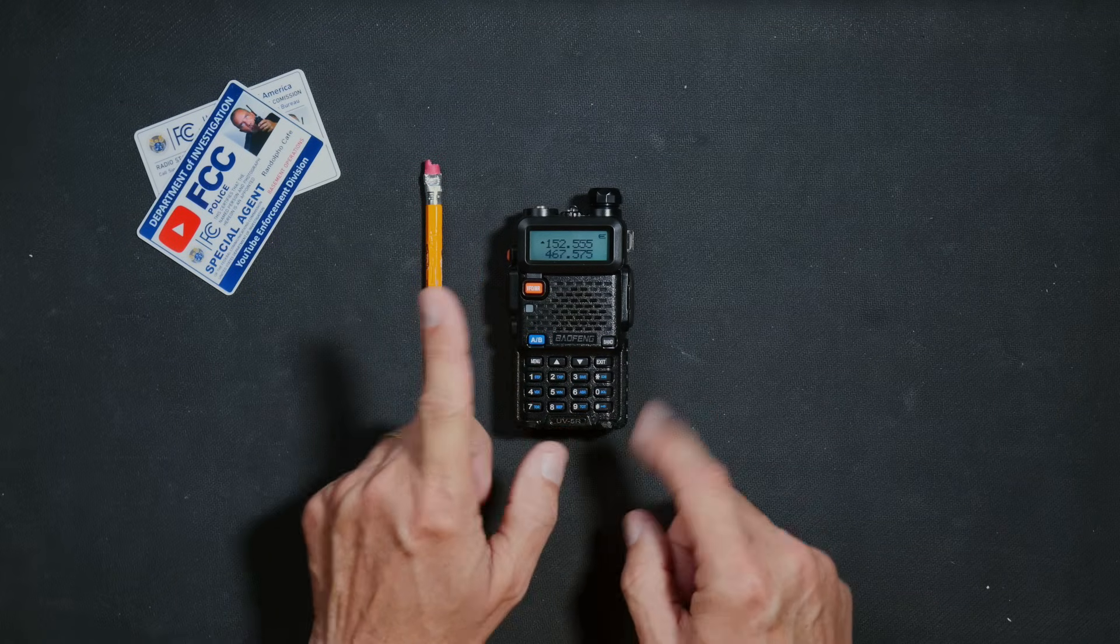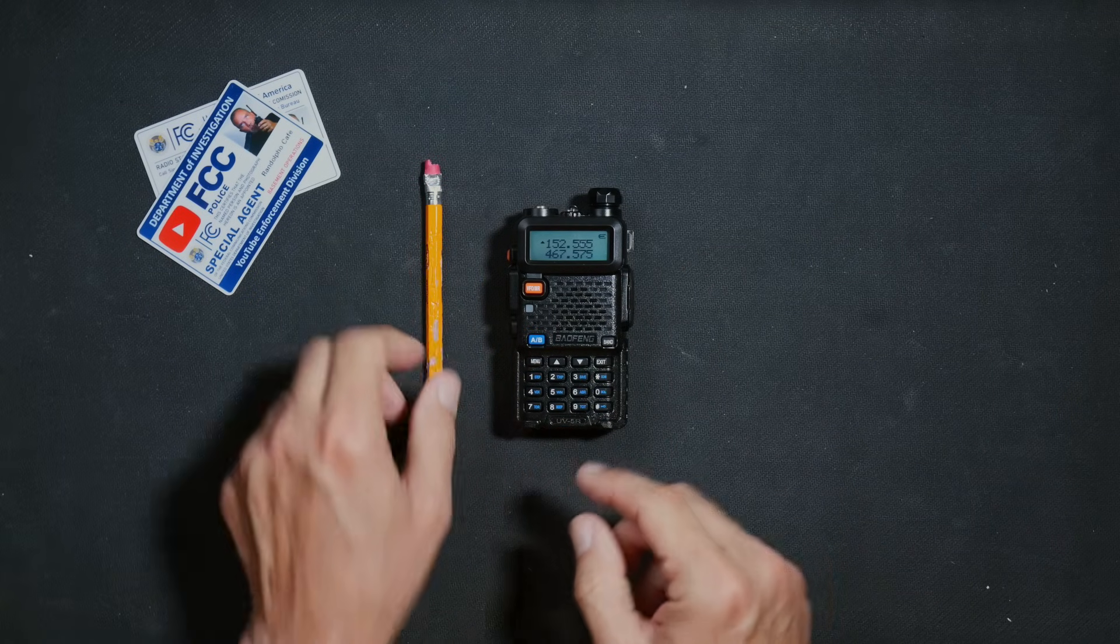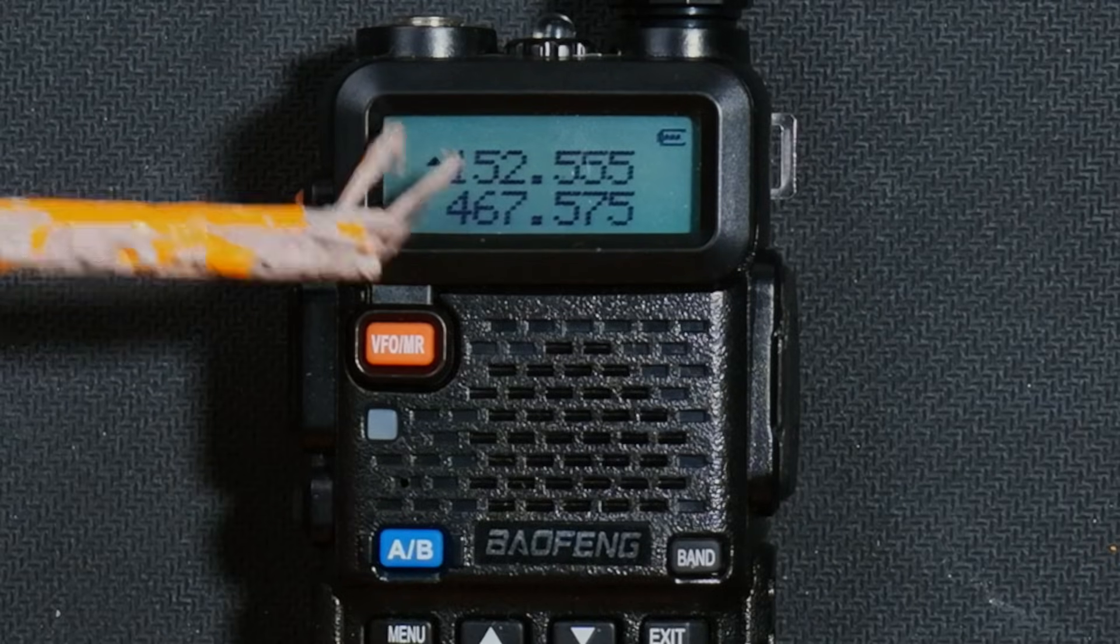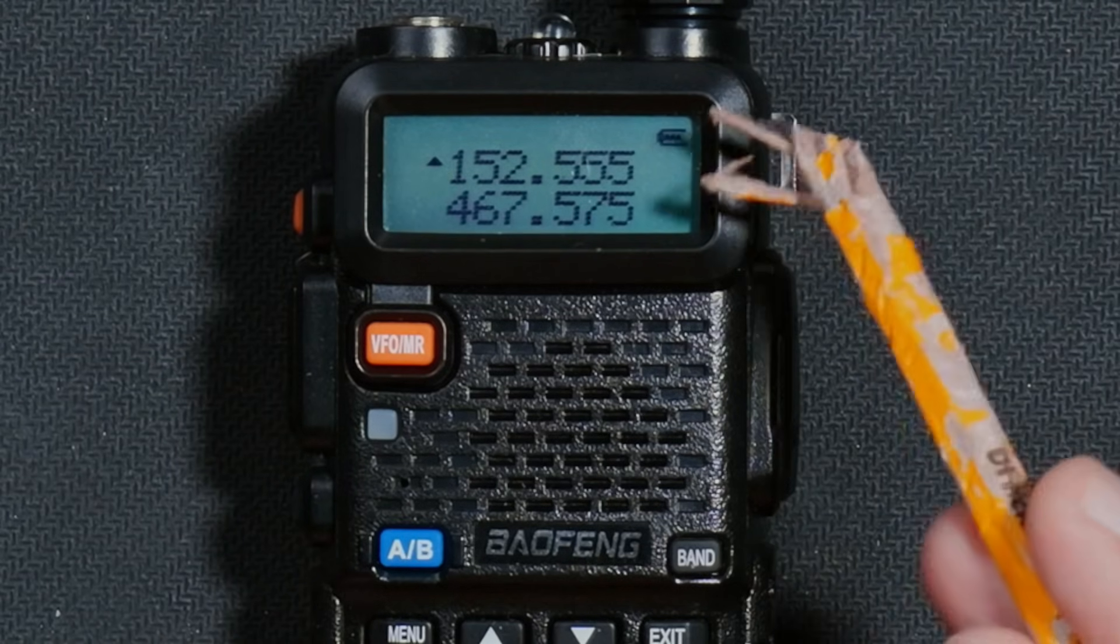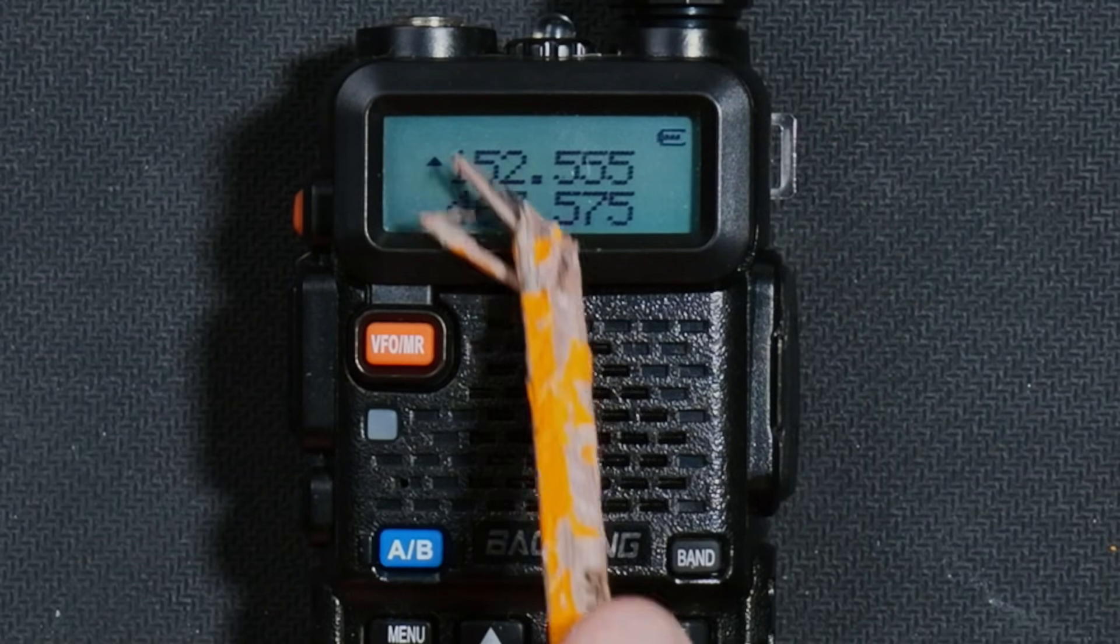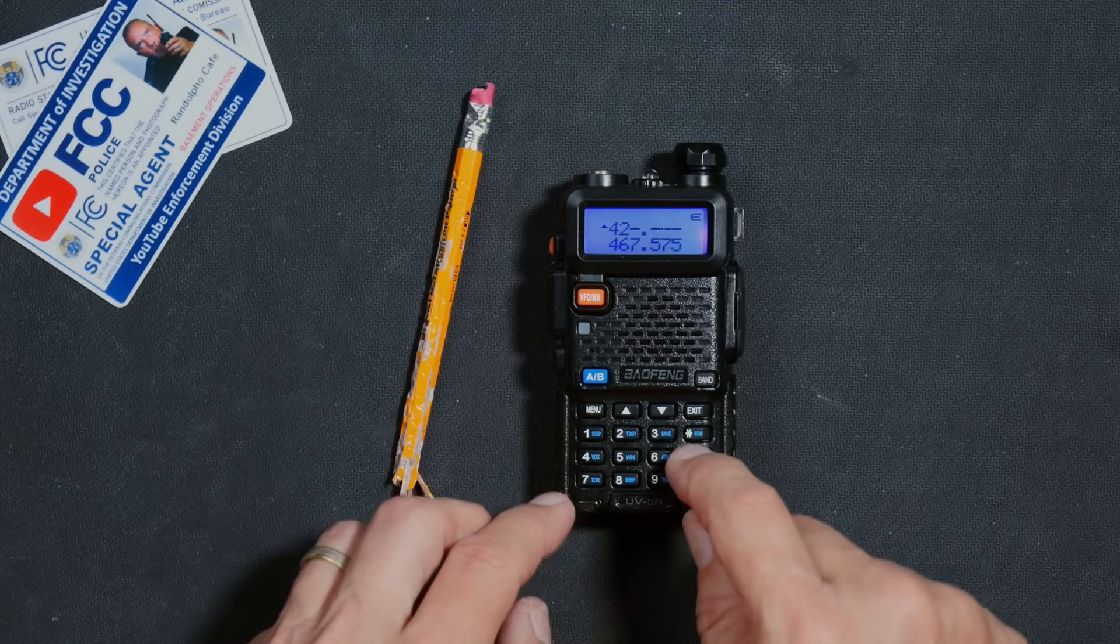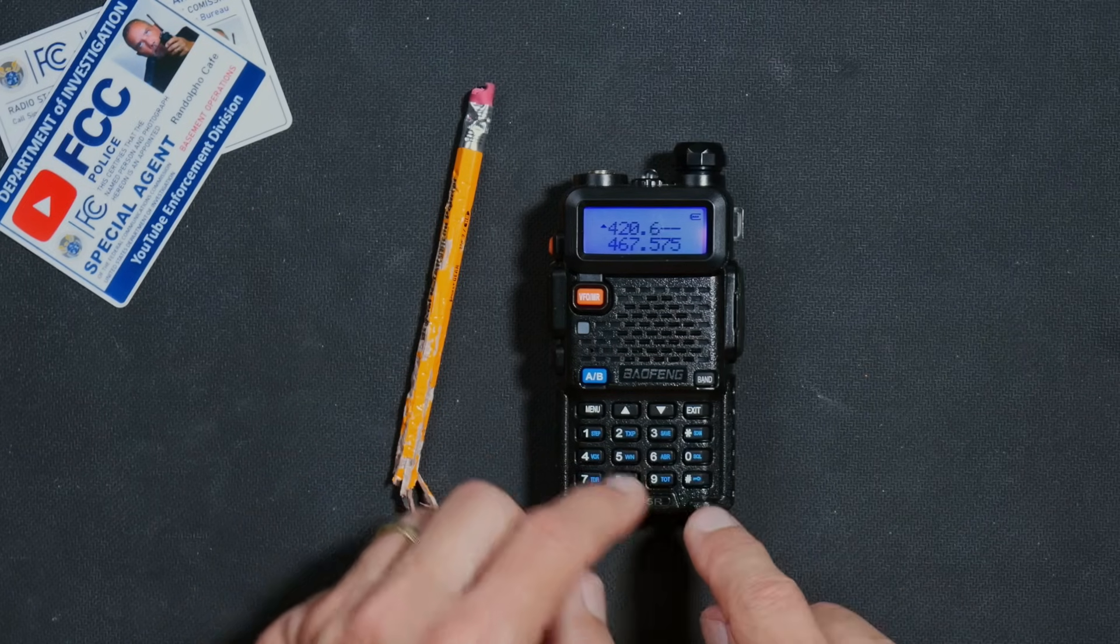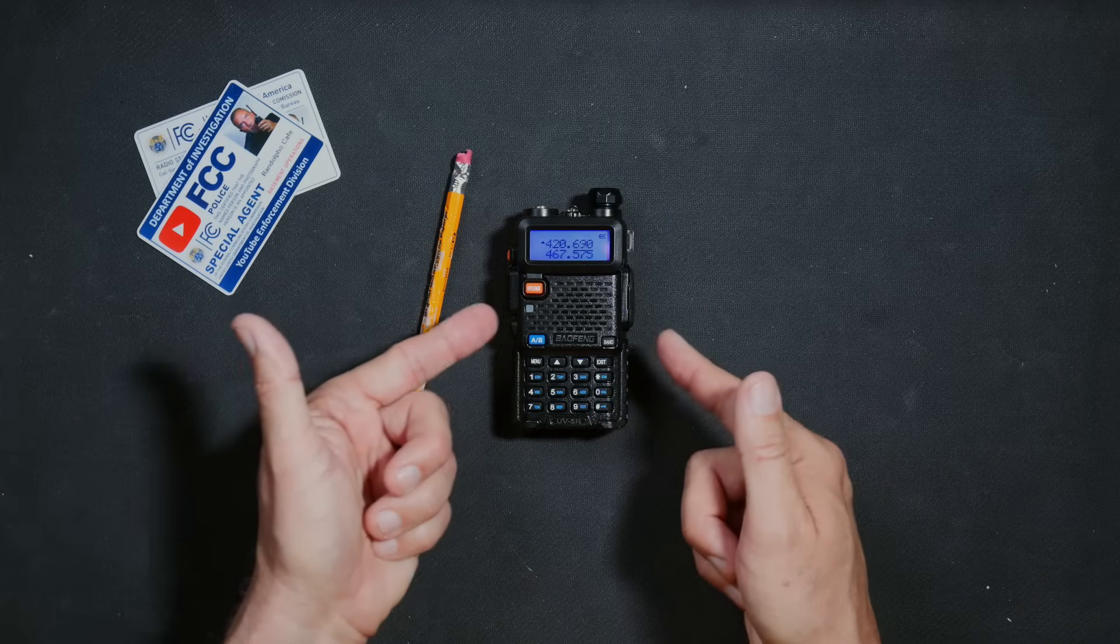The frequency must be six digits long with three numbers on the left and three numbers on the right of the little dot in the middle. Four, two, zero, six, nine, zero. Thusly.